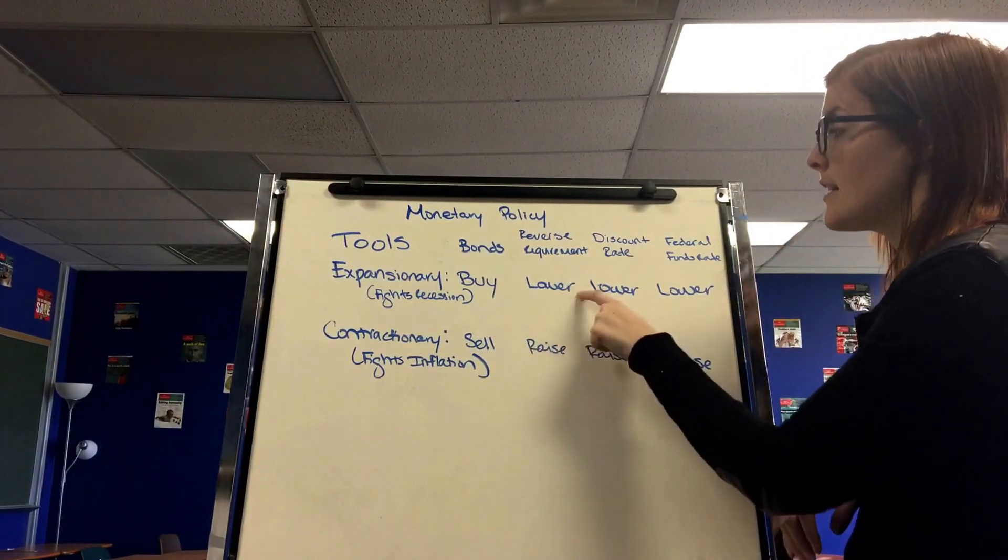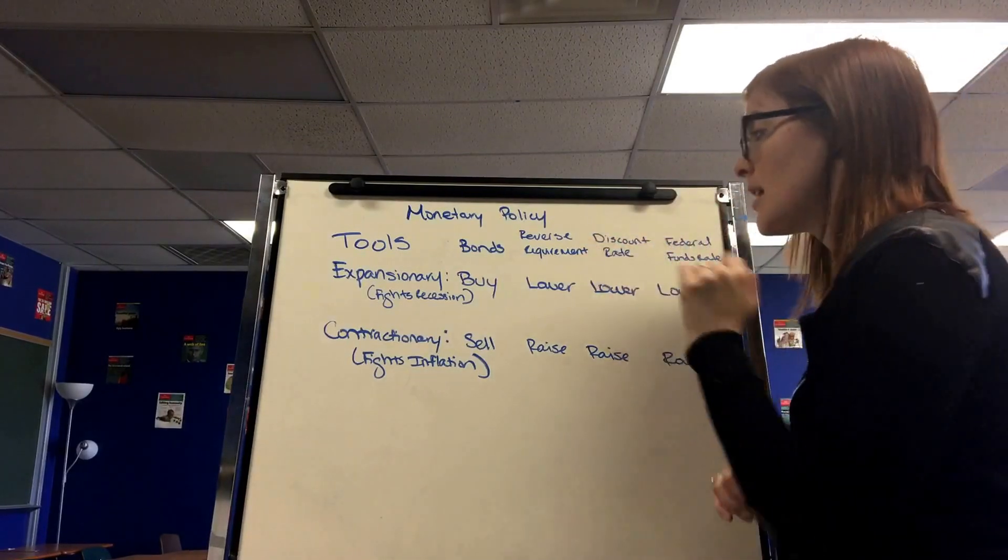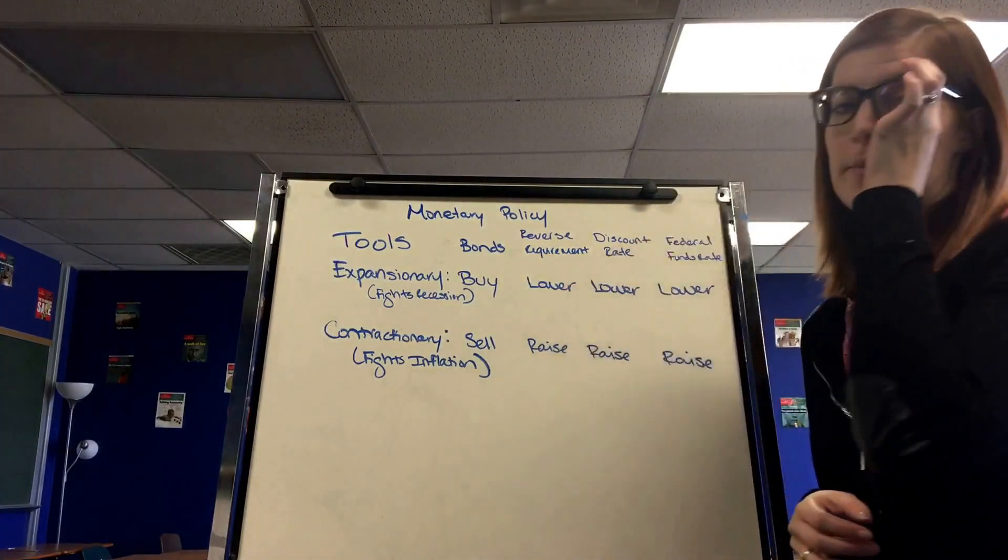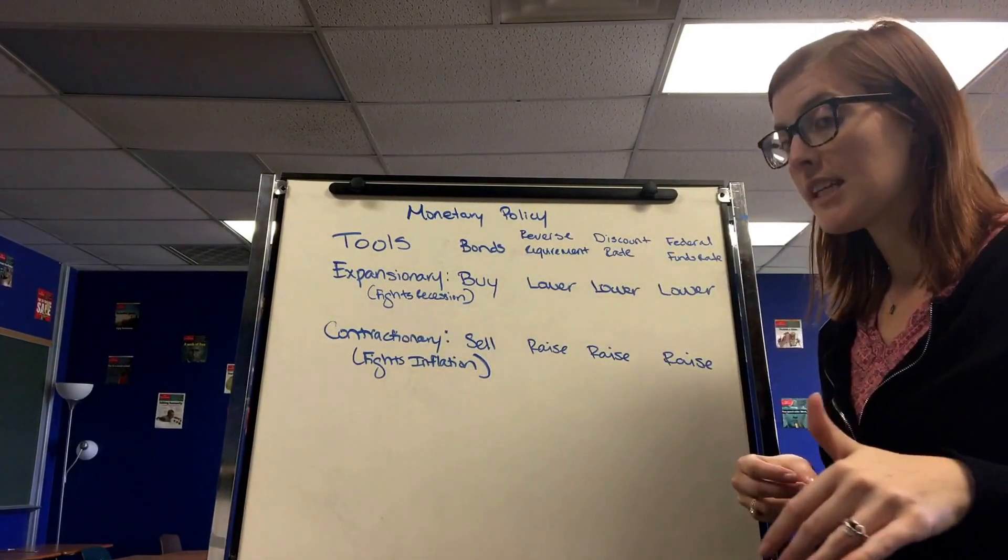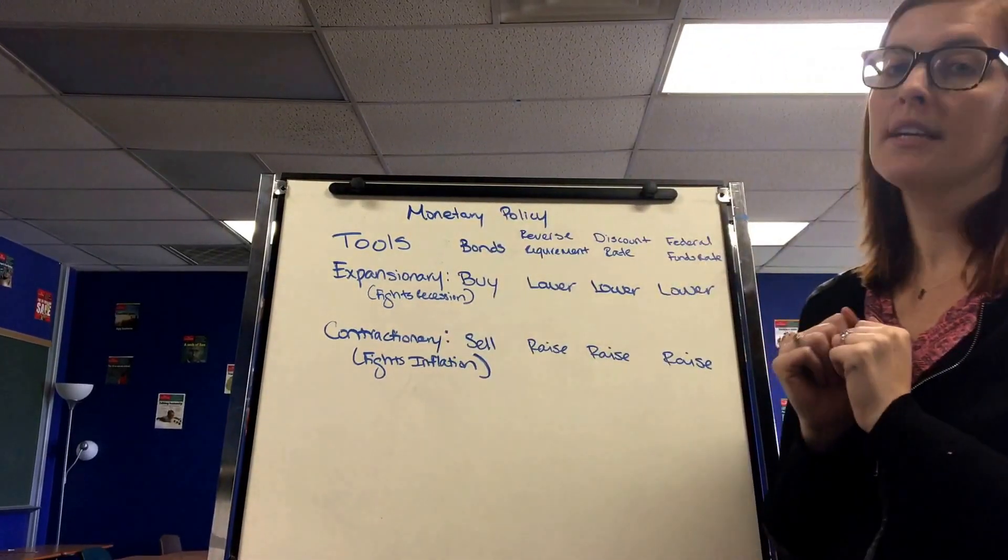The reserve requirement is the next tool. This is the amount of money banks have to keep in their vault at all times, so typically around 10%. So if they were to lower this reserve requirement to 8%, banks would not have to keep as much in their vault, they could loan more money out and the money supply would increase.